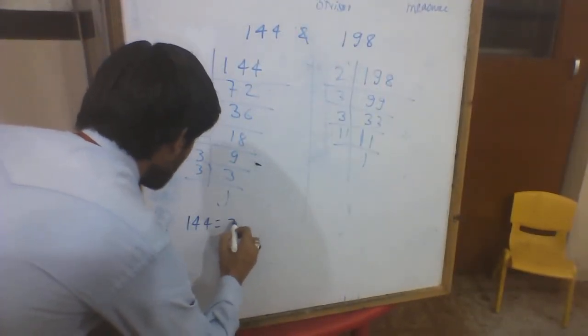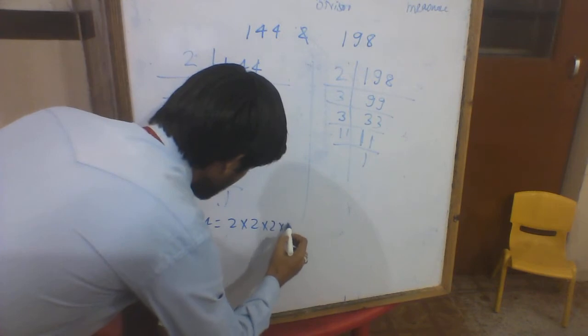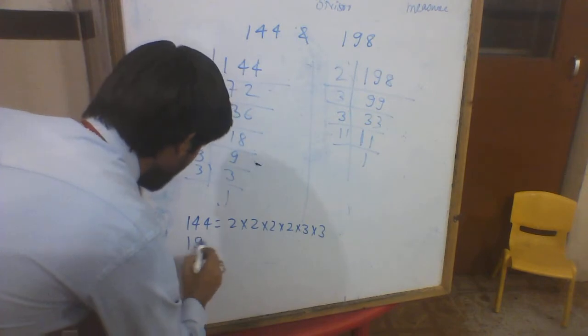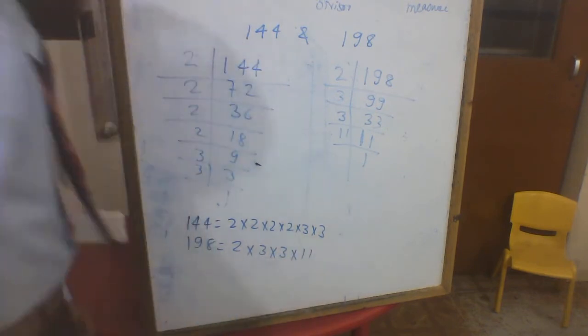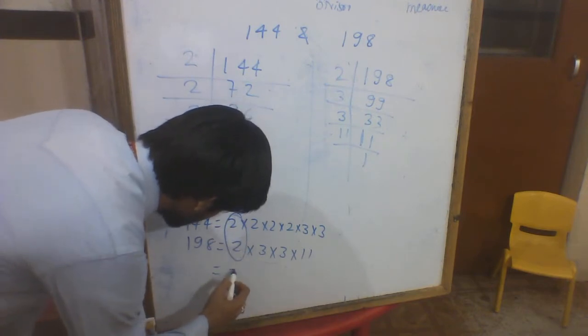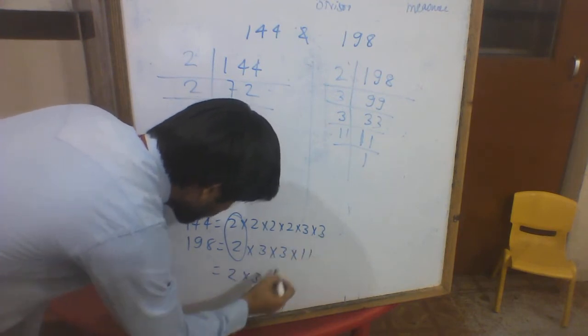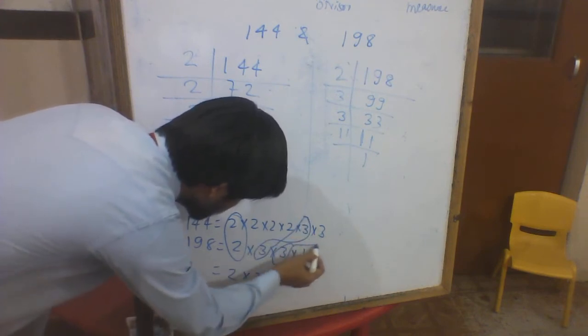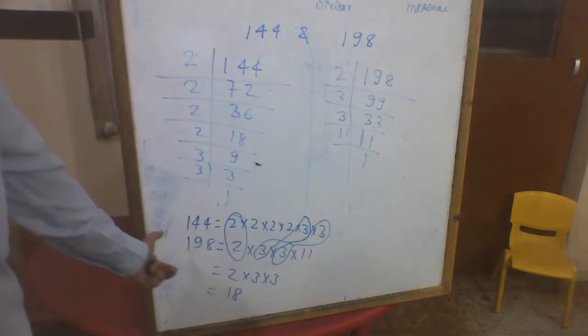For 144, the factors are 2, 2, 2, 2, 3, 3. For 198, the factors are 2, 3, 3, 11. The common factors are: 2 is common, 3 is common, and 3 is common again. The highest common factor using prime factorization is found by multiplying the common factors together.